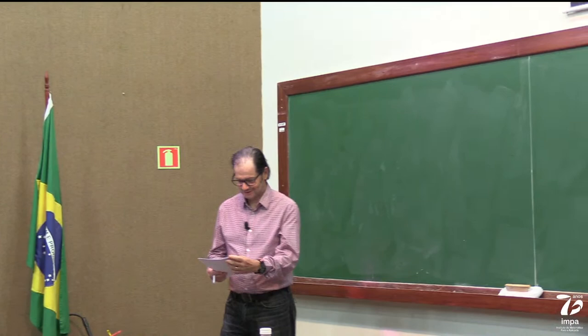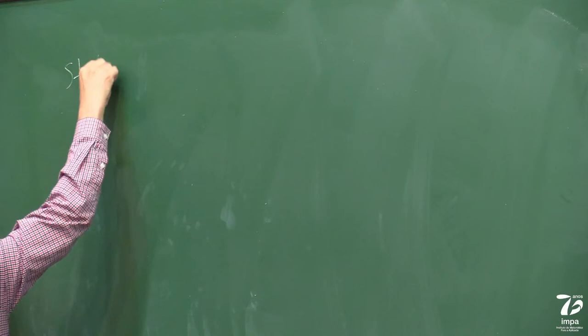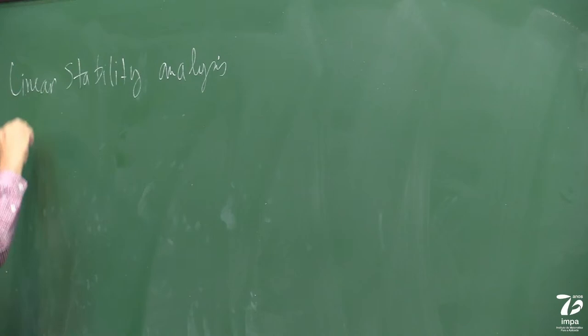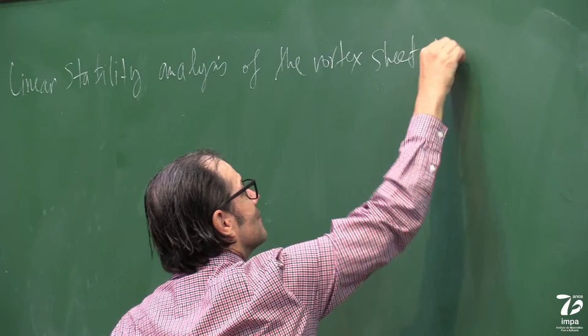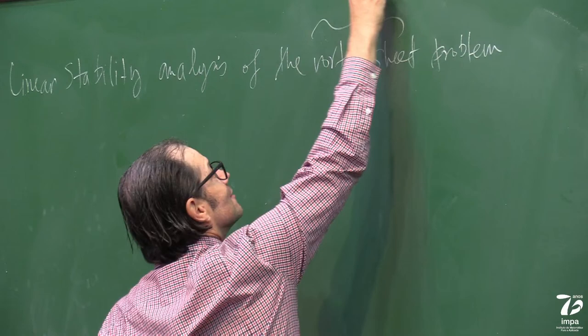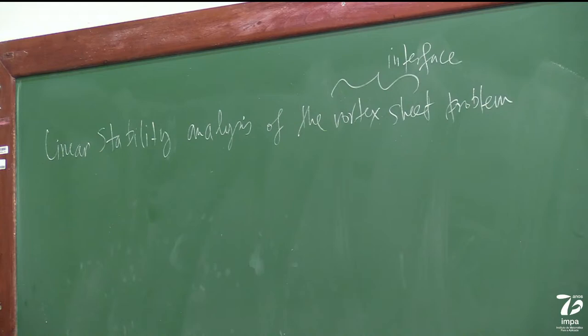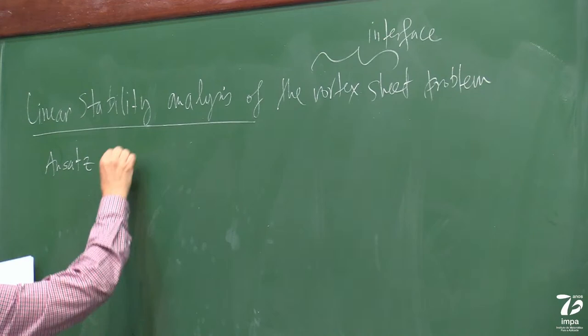Good morning. Let's continue with our stability analysis — more precisely, the linear stability analysis of the vortex sheet, that is, the interface problem. Let me do a brief review of last class. We had this ansatz — the notation changes from text to text — and a 2π window for our periodic perturbation.